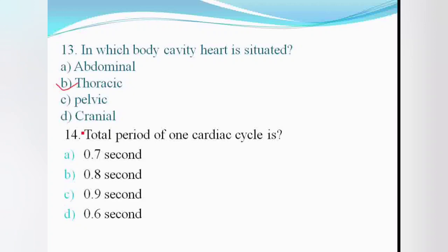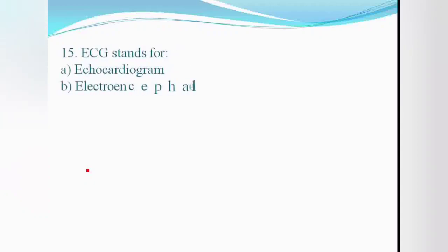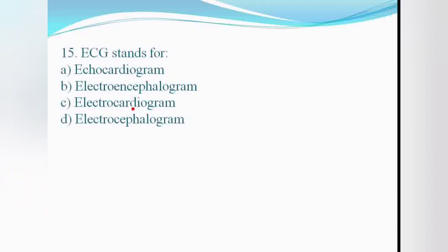The total period of one cardiac cycle is: 0.7, 0.8, 0.9, or 0.6 seconds. The answer is 0.8 seconds. One cardiac cycle includes one contraction and one relaxation.